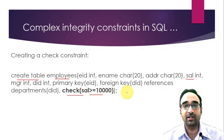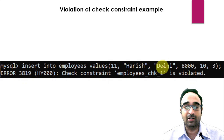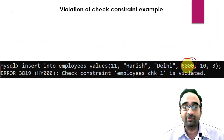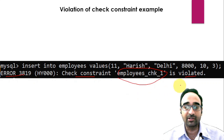If a user gives a value less than 10,000 — for example 9,000 — the DBMS will raise an error. In the MySQL command prompt, I'm writing an INSERT query with six columns. The salary value I'm giving is 8,000, which is less than 10,000, so it violates the check constraint and gives an error: 'check constraint is violated'. The system auto-assigns a default name to the constraint since I didn't specify one.